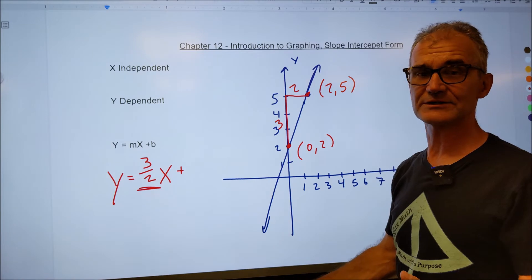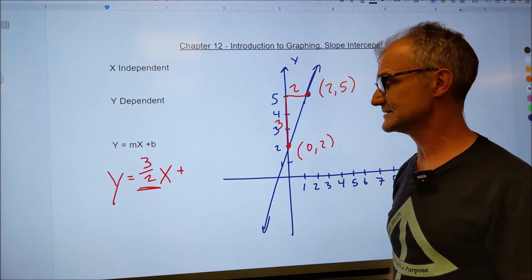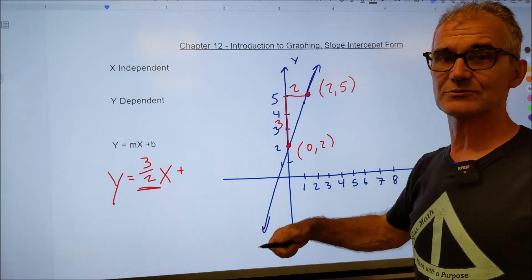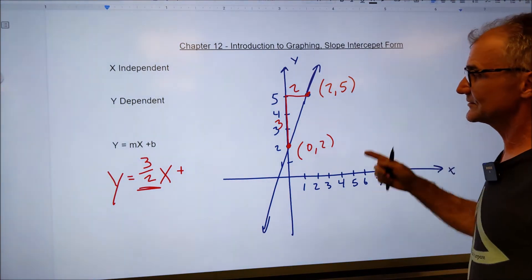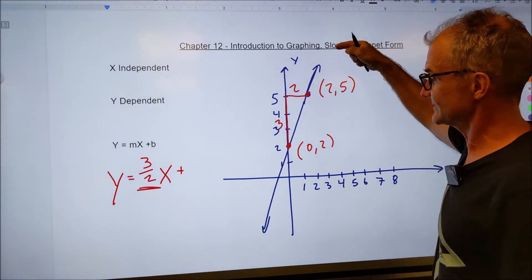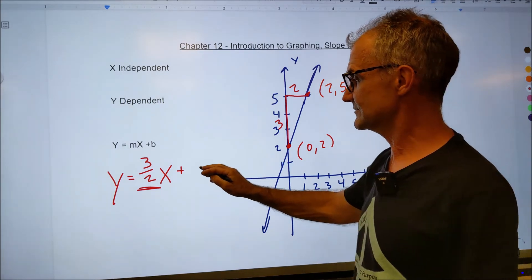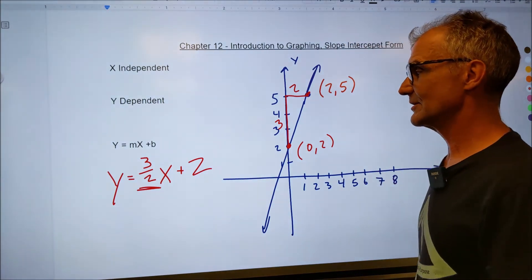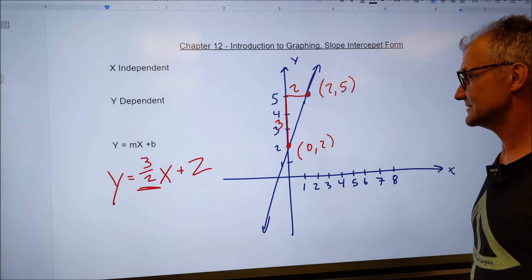I could reduce that fraction, convert it into a decimal, 1.5x, one and a half, one and one half x. And the next thing I need to do is figure out where it crosses the y-axis. It's crossing right here at two. So that's just my y-intercept. Y equals three over two x plus two.